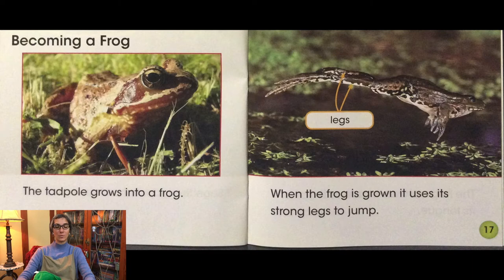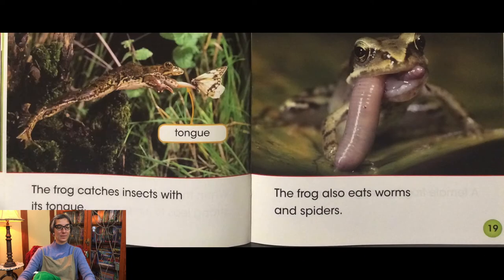When the frog has grown, it uses its strong legs to jump. The frog catches insects with its tongue. The frog also eats worms and spiders.